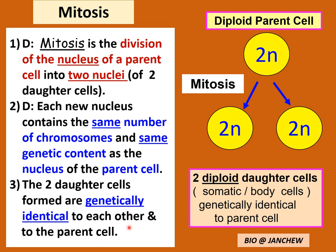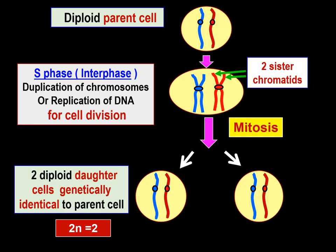Two daughter cells formed are genetically identical to each other and to the parent cell. If they are not genetically identical to the parent cell, it can cause problems in health. We have a diploid parent cell, represented by 2n, meaning there are two sets of chromosomes — one set of paternal origin and one set of maternal origin, from the father and mother respectively. After mitosis, two diploid daughter cells are produced, genetically identical to the diploid parent cell.